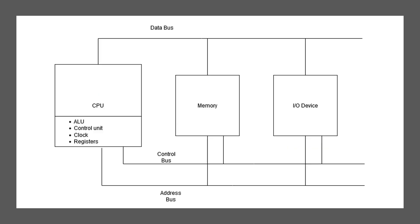We're going to start by looking at a diagram of what the actual processor looks like in relation to other pieces of hardware. There are three blocks: the CPU, the memory, and IO devices. In reality there could be many different IO devices — things like monitors, keyboards, and mice. Generally there's usually one CPU and one set of memory, with some amount of IO devices.